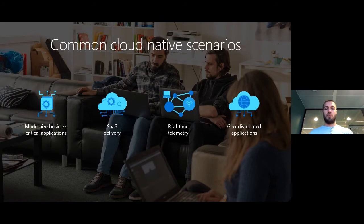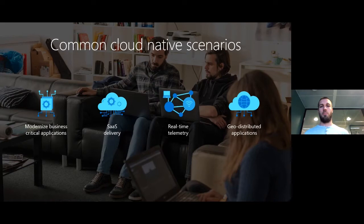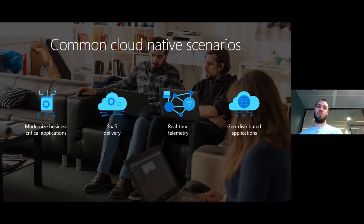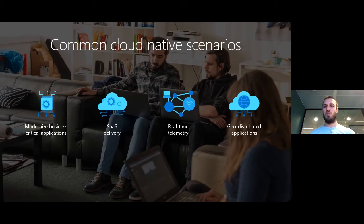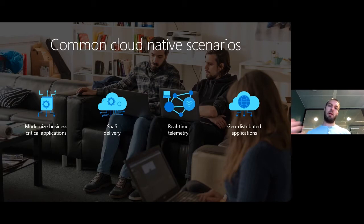SaaS delivery and real-time telemetry are also two big scenarios. With containers you can very easily deploy for multi-tenant SaaS platforms, and for real-time telemetry you can build scalable platforms that handle all the loads from your IoT systems. We have customers doing this with cloud gateways and customers running cloud native applications on ships because of that portability and scalability. Geo-distributed applications is also a big area, since deployment is so much faster that you can go to multiple regions more easily and bring your application where your customers are.